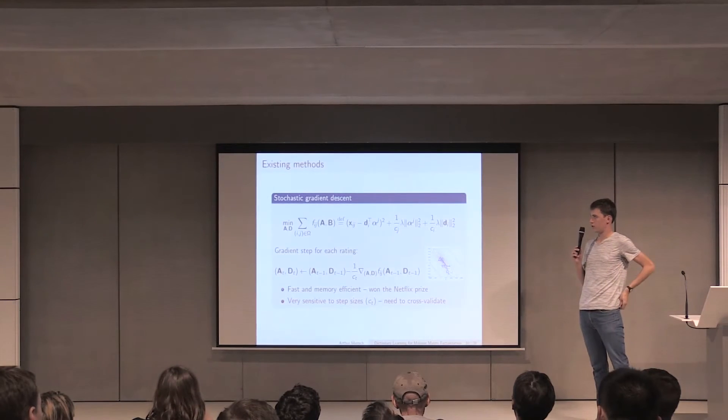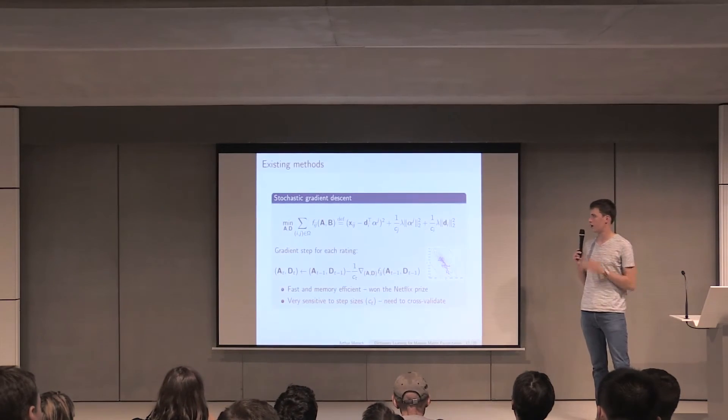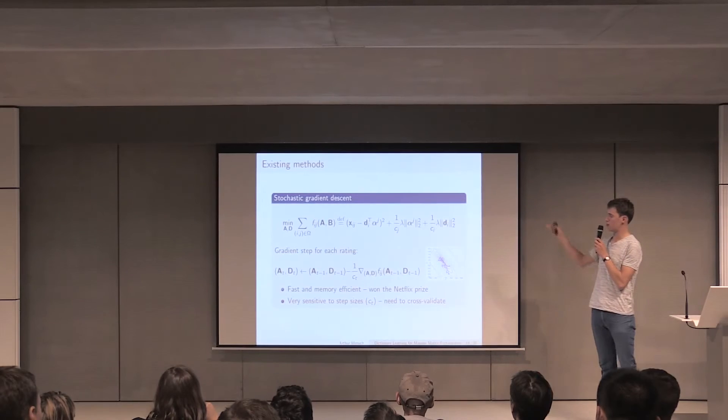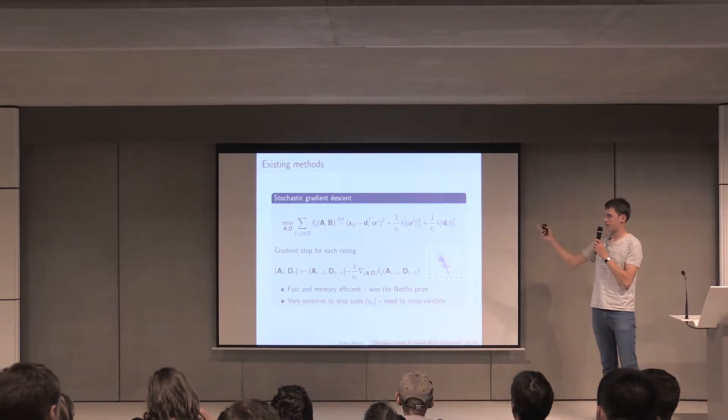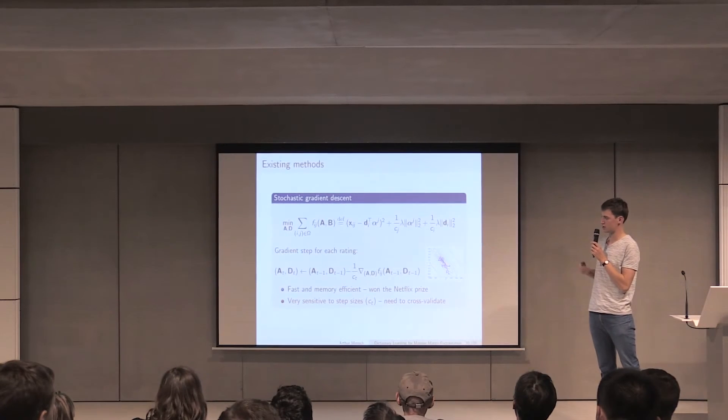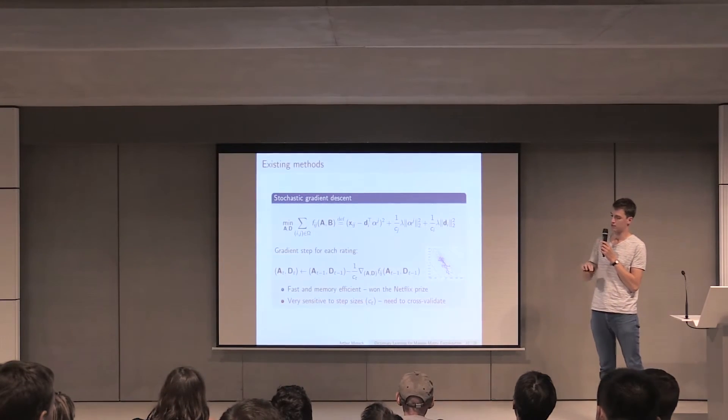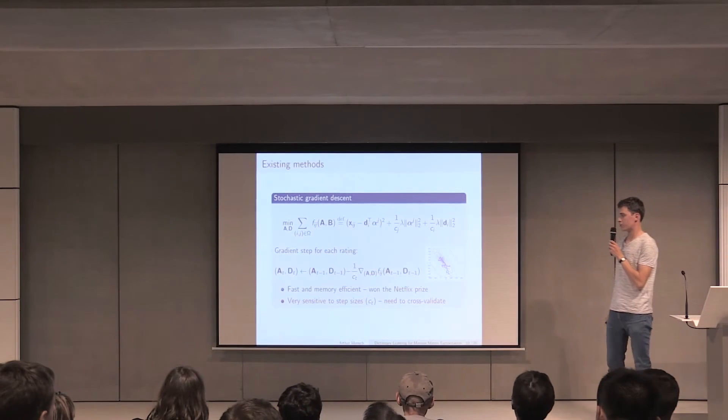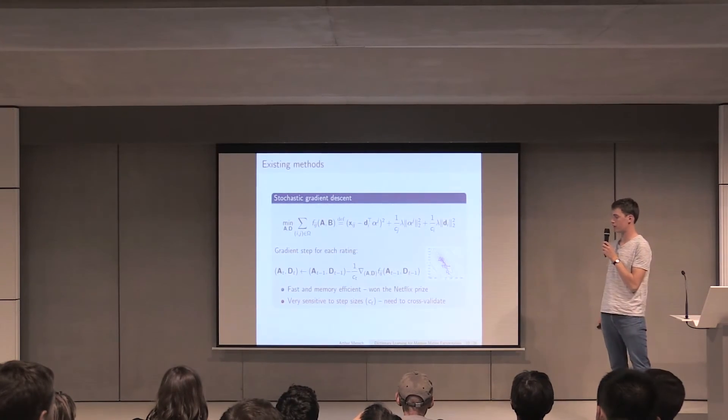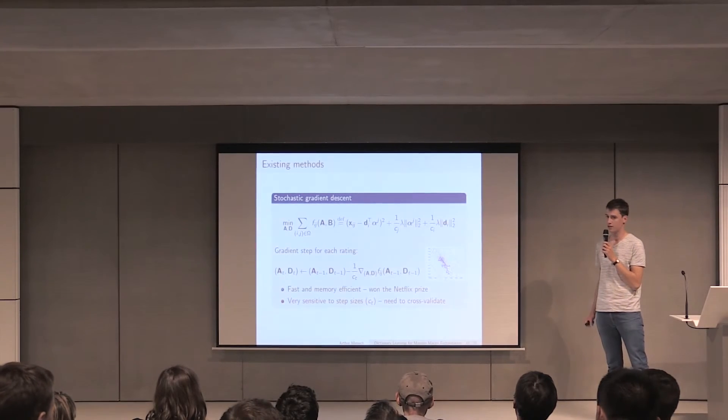The other category of method that is used is stochastic gradient descent, where you see your objective function as a sum of point-wise loss functions. The point-wise loss function is simply the difference between the predicted and the true ratings, plus some regularization. With this, you compute the gradient of each of these point-wise losses, and stochastic gradient descent is the following of the gradient in a stochastic manner, meaning that you select randomly the loss at each iteration. It's fast and it's memory efficient, if you set the parameters. This is the flavor of method that won the Netflix prize a few years ago. But the problem is that it is very sensitive to step sizes, and you typically need to cross-validate on them if you want to have good results.